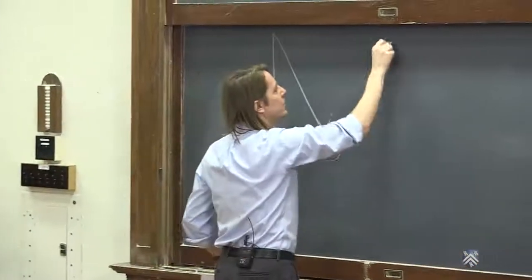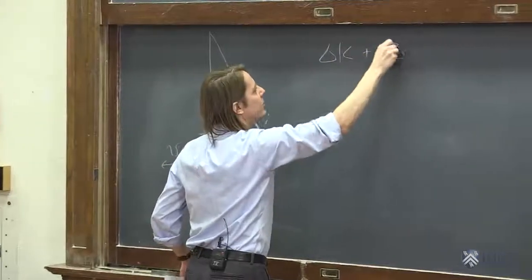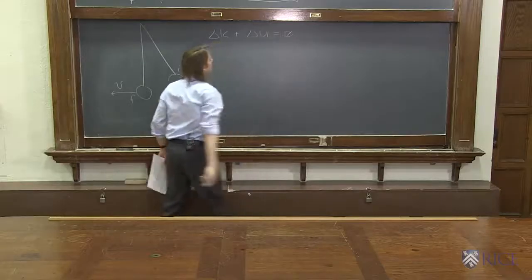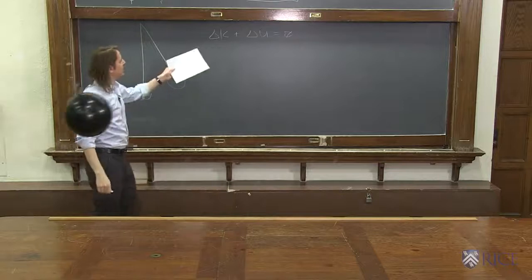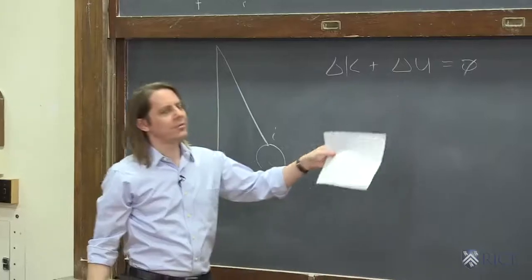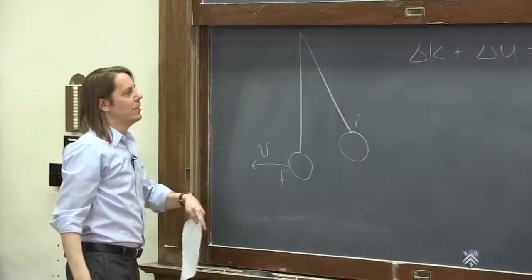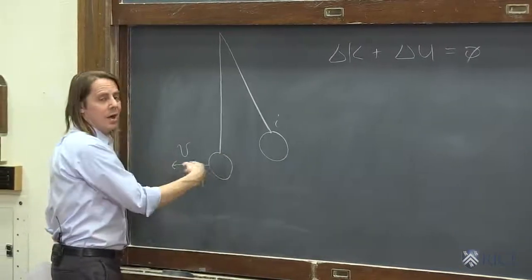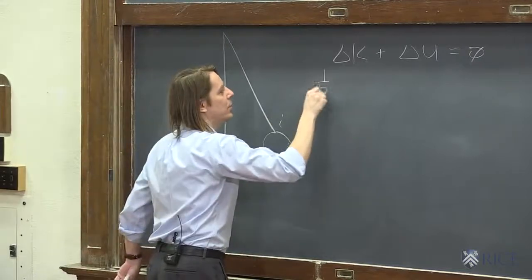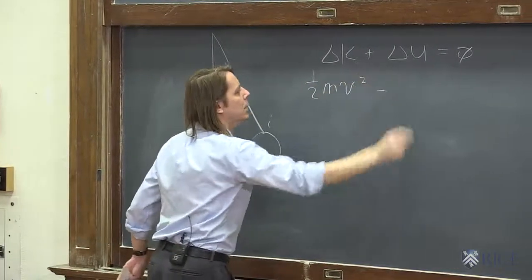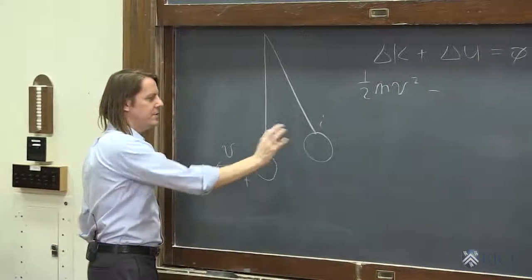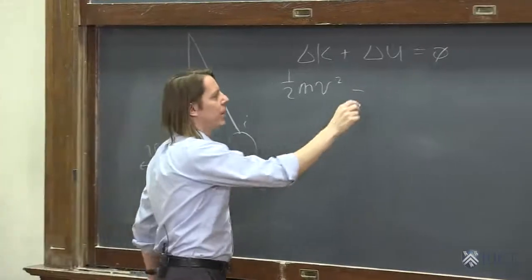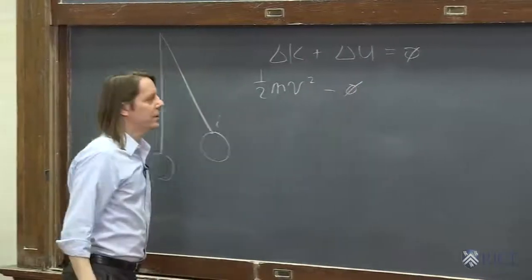The best formula in this case is this one: delta k plus delta u equals 0. Whatever change in kinetic and whatever change in potential have to cancel out. Delta k is k final minus k initial. K final is what we're looking for, 1 half mv squared. K initial is 0, because I'm going to release it from rest. So v is 0, so kinetic energy is 0.